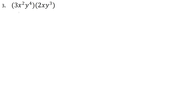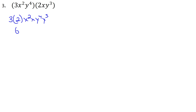Here's another example with two monomials. Again, coefficients first: 3 times 2, then x² times xy⁴ times y³. The coefficients become 6, x² times x becomes x³, and y⁴ times y³ is y⁷.